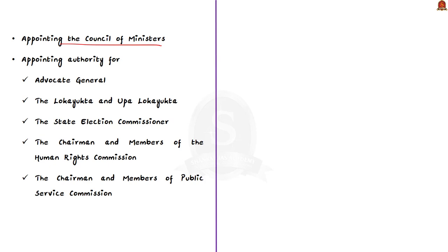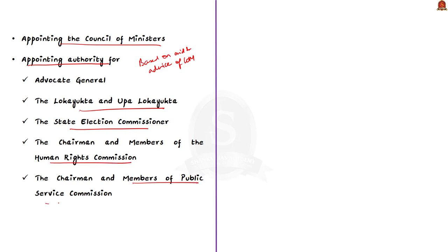Most functions of the governor are performed on the advice of the chief minister and council of ministers, including summoning and proroguing sessions of the state legislature, promulgation of ordinances, giving assent to bills, and appointment of the council of ministers. The governor is also the appointing authority — based on the aid and advice of the council of ministers — for the advocate general, Lokayukta, state election commissioners, chairman and members of the Human Rights Commission, Public Service Commission, state chief information commissioner, and members of the information commission.